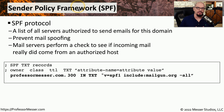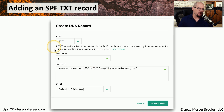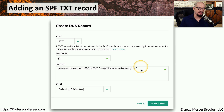SPF was created to help prevent others from spoofing your fully qualified domain name and sending email as if you had sent it yourself. A mail server receiving an email that says it was from professormesser.com will query the professormesser.com DNS server, retrieve this SPF record, and be able to determine whether this really came from an authorized host. Here's the same process for creating a text-based DNS record — you paste in the text associated with the record you'd like to add. In this example, I'm adding the SPF record into my DNS server with a TTL of 15 minutes.